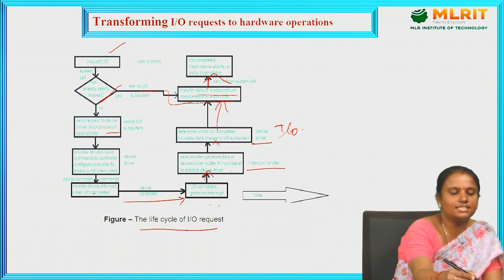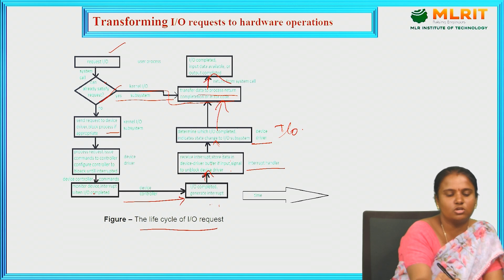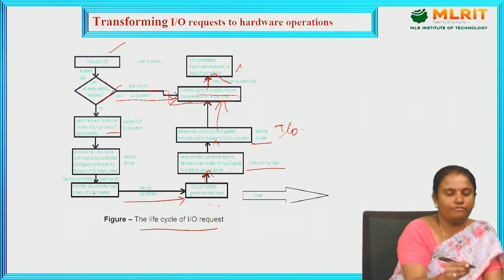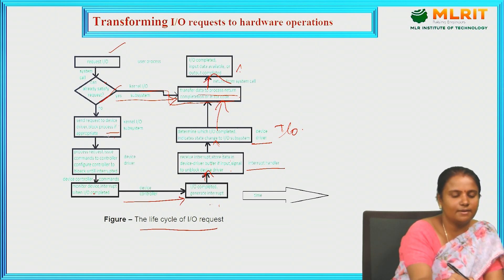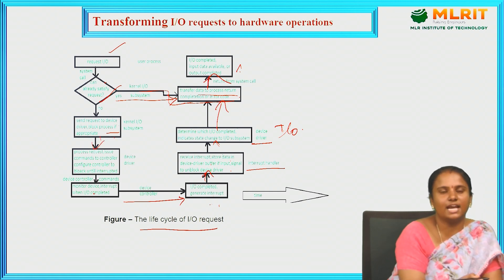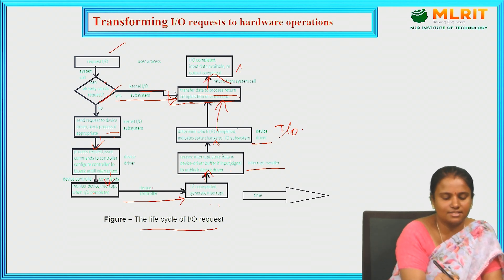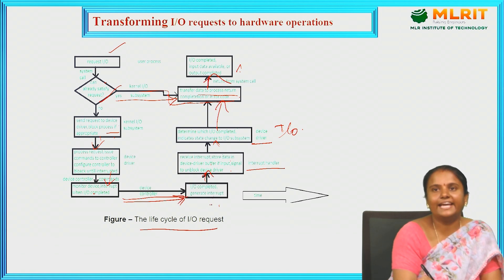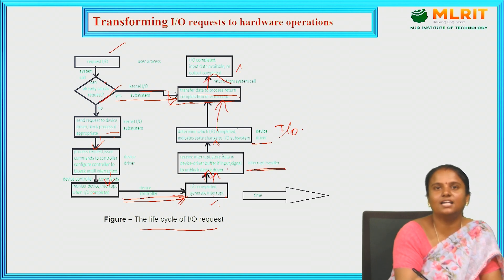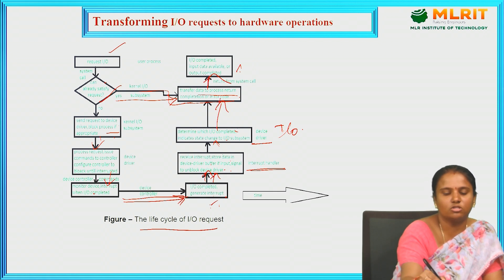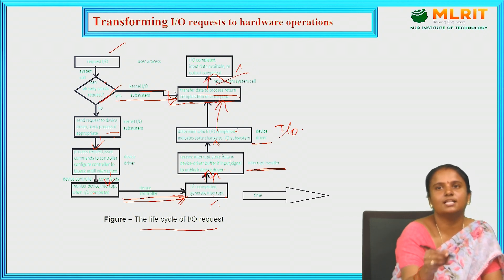If any interrupt occurs, it generates a signal and the interrupt handler receives it. Then it goes to the device drivers — the input-output device drivers — which transfer the data and return to the system call. This is the life cycle of the input-output request. If the request already exists, it signals the kernel, and the process returns to the system call. If not, it goes to the kernel subsystem and processes the request.